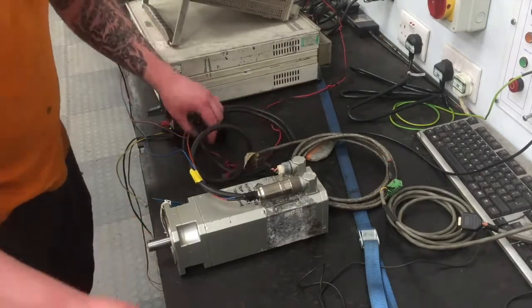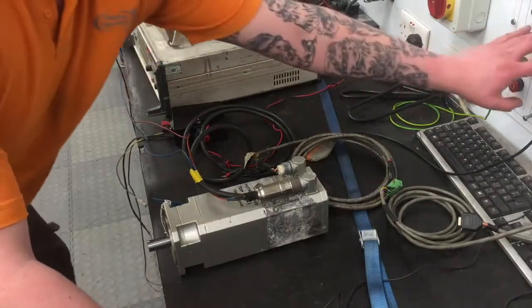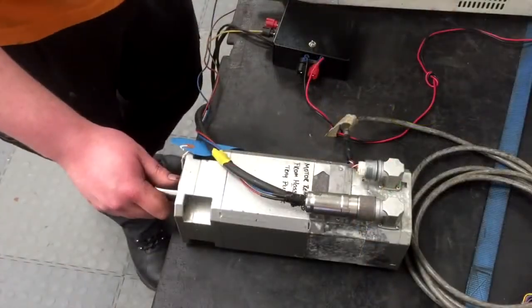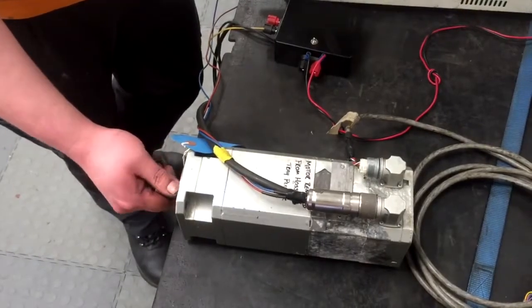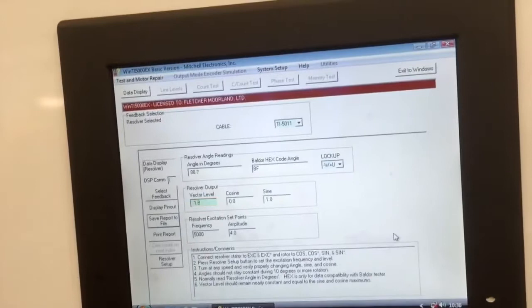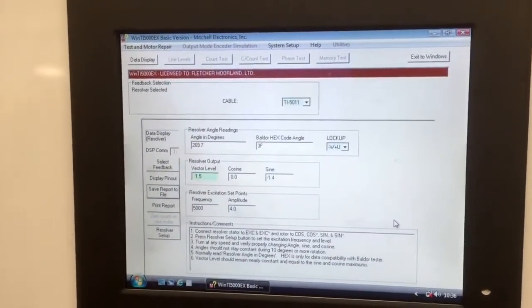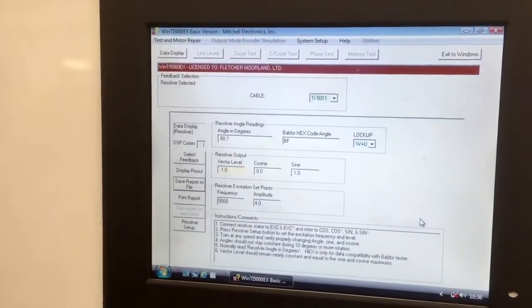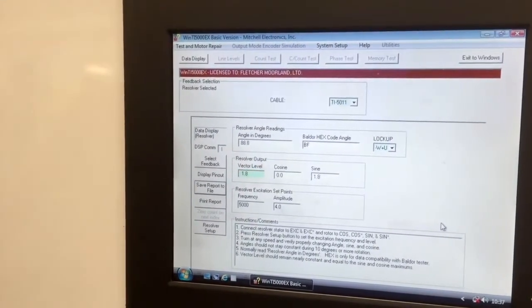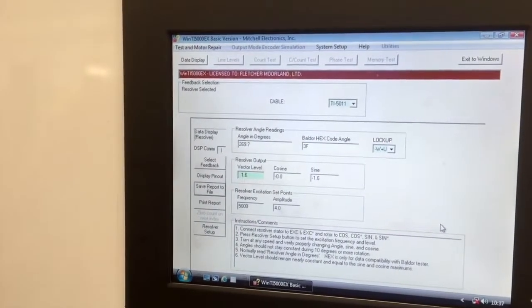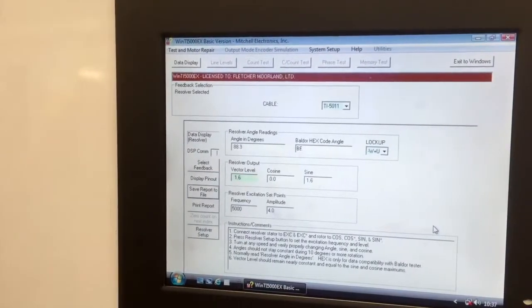The next test that Steve will carry out will be an encoder count test and alignment test. The feedback device for this motor, which is a resolver, has been coupled up to our test rig. We use proprietary software and look at the angle and count test. We can see the vector level is showing an error here and also the angle is not constant. Straight away we have found that there is a fault with the resolver which will need to be investigated further and probably replaced.